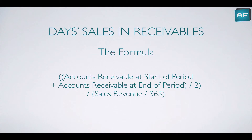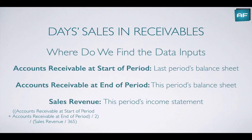So here's the formula — I'm going to keep it in the bottom left-hand corner throughout the whole lecture, so you don't have to write it down immediately. Generally, you take accounts receivable at the start of the period and add this to accounts receivable at the end of the period, and divide that by 2. So essentially you're finding an average accounts receivable balance, and you divide that figure by sales revenue divided by 365.